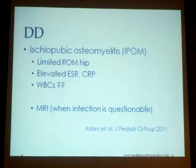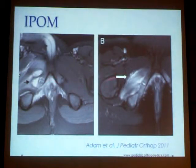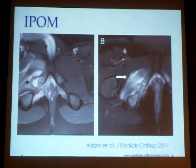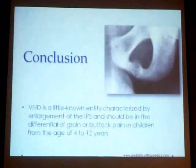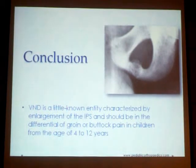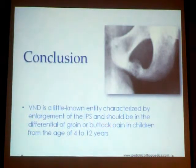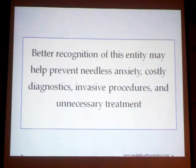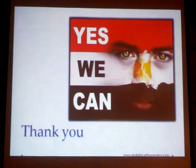MRI is very helpful in differentiating Van Neck disease from osteomyelitis, because in osteomyelitis there is myositis, fluid collection, marked edema, and marked enhancement. To conclude: Van Neck disease is a little-known entity characterized by enlargement of the ischiopubic synchondrosis and should be in the differential diagnosis of groin pain in children aged 4 to 12 years. Better recognition of this entity may help prevent needless anxiety and unnecessary invasive diagnostic procedures. Thank you very much.